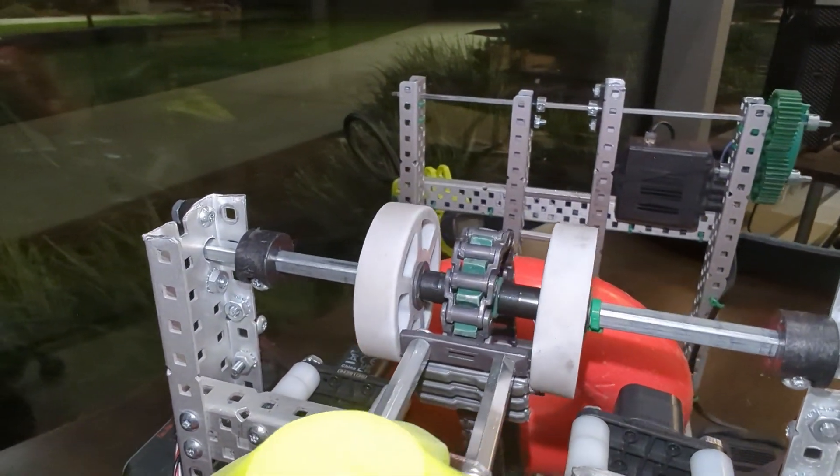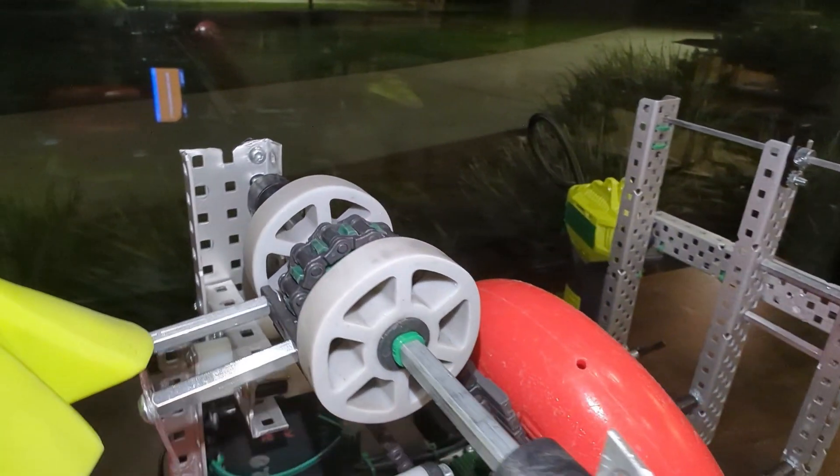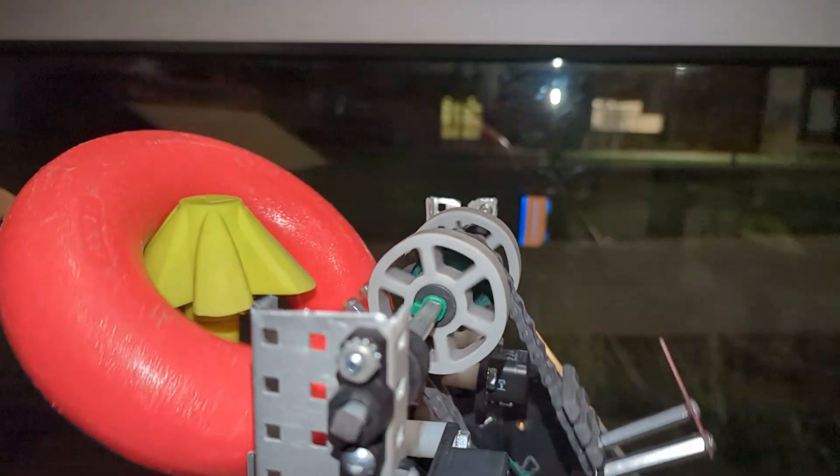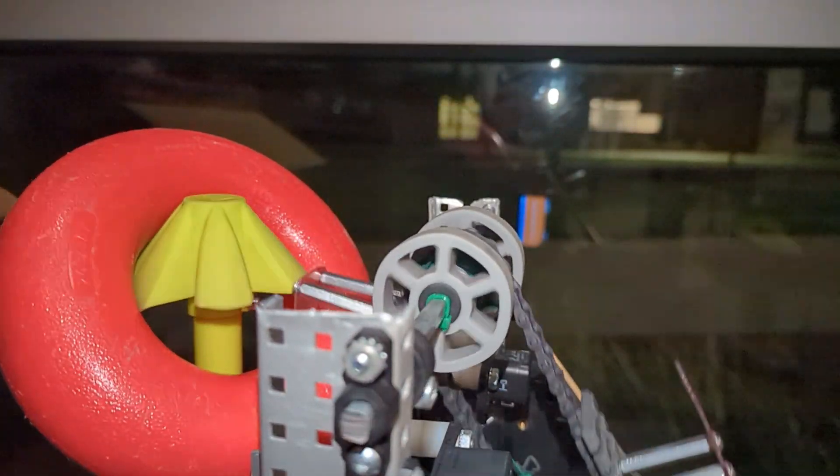Now if your flex wheels are too close together, you might see something like this where they aren't actually doing much to contact the ring and they aren't really doing much at all to help score on the peg better.